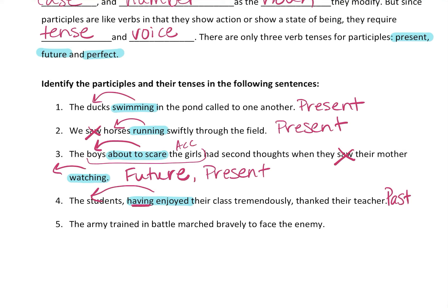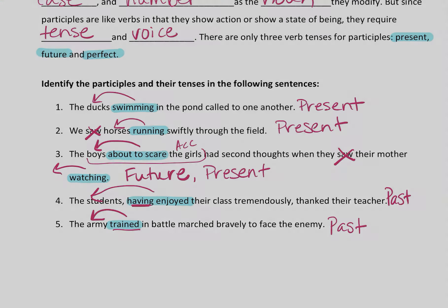'The army trained in battle marched bravely to face the enemy.' This time it's not an '-ing' form — it's 'trained.' Which army? The trained army. 'Trained' describes the army. What tense is it? Trained is past tense. There's lots more to come on this, but that's your introduction to participles.